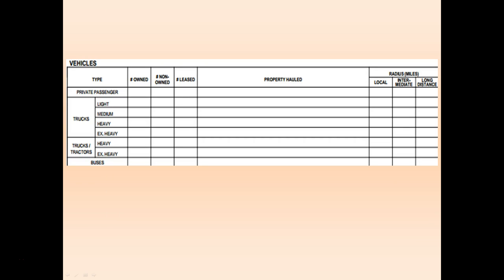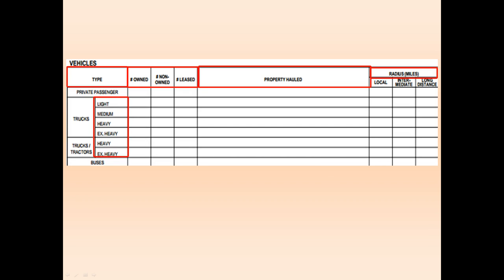Filling out the vehicles portion is important. The company is looking for information on the types of vehicles that the insured has — whether they are owned, non-owned, or leased — the property being hauled, and the radius. Make sure under type that you specifically list the number of light, medium, heavy, or extra heavy trucks that apply to any of the broken down categories.